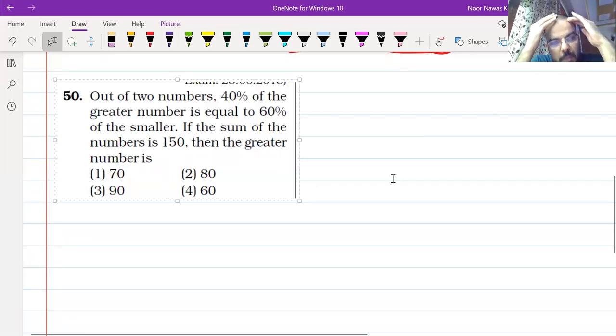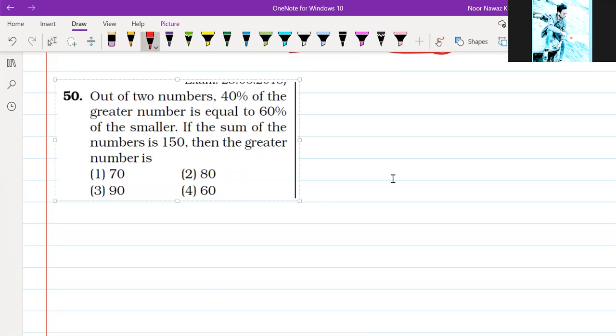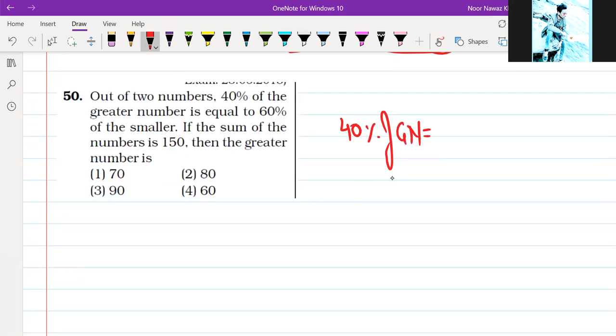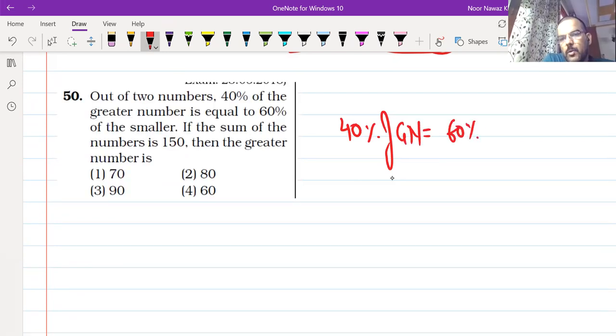Out of two numbers, 40% of the greater number is equal to 60% of the smaller number. If the sum of the numbers is 150, and we have the sum given...